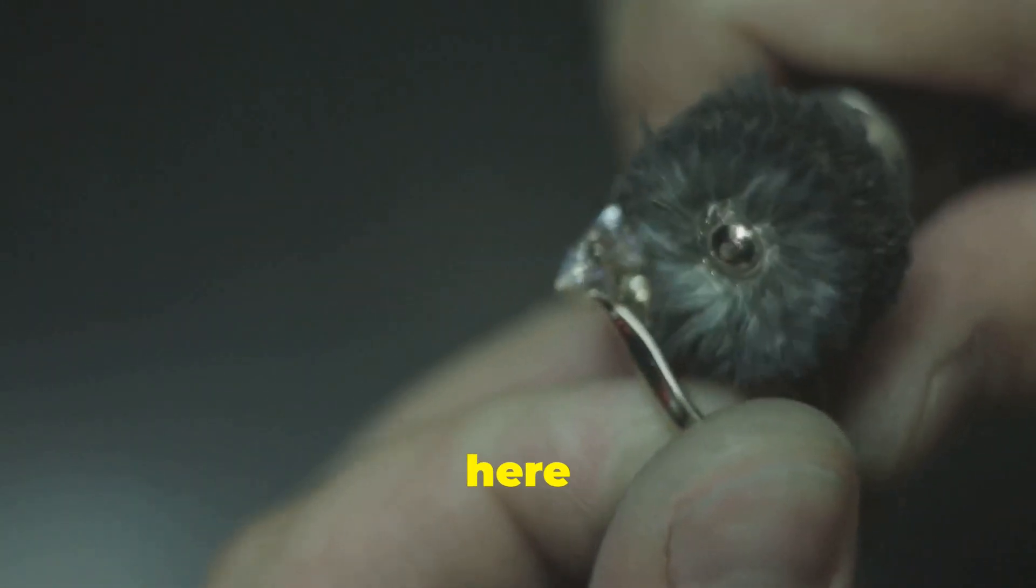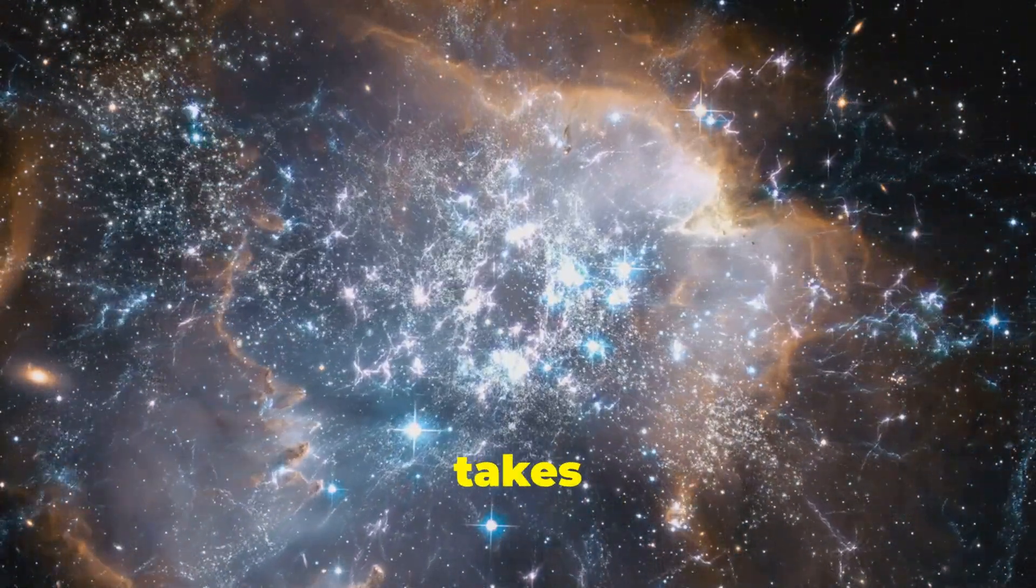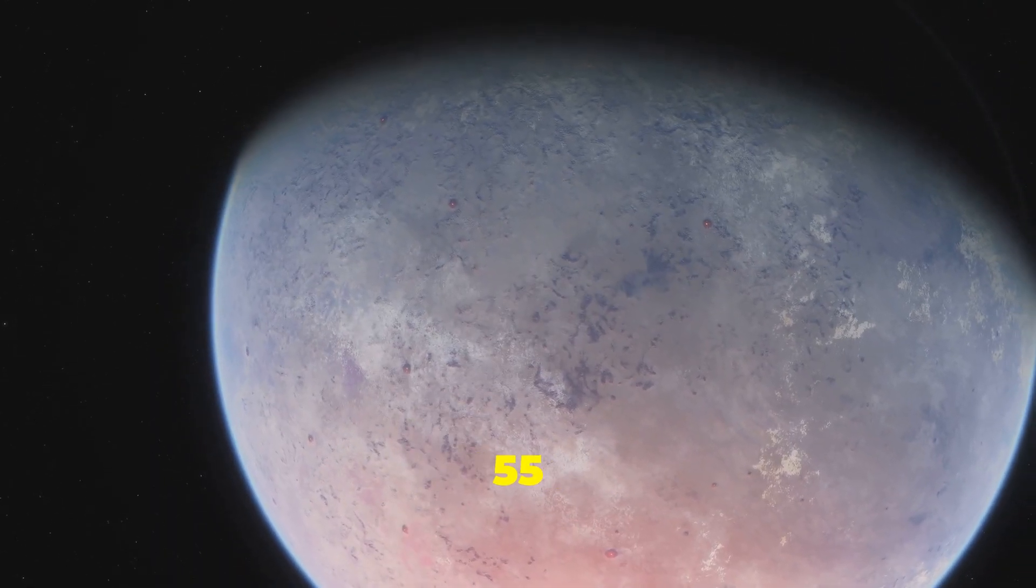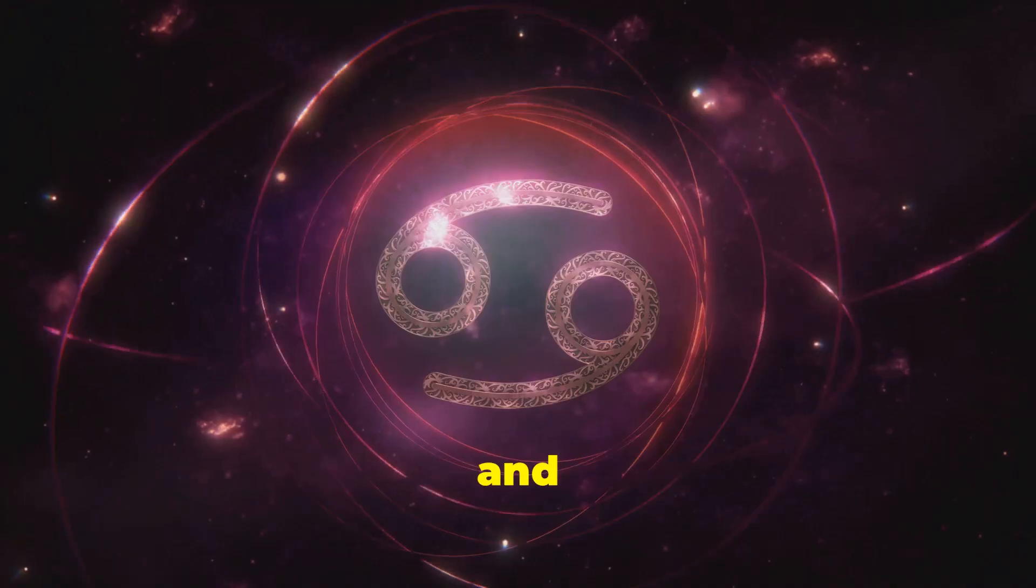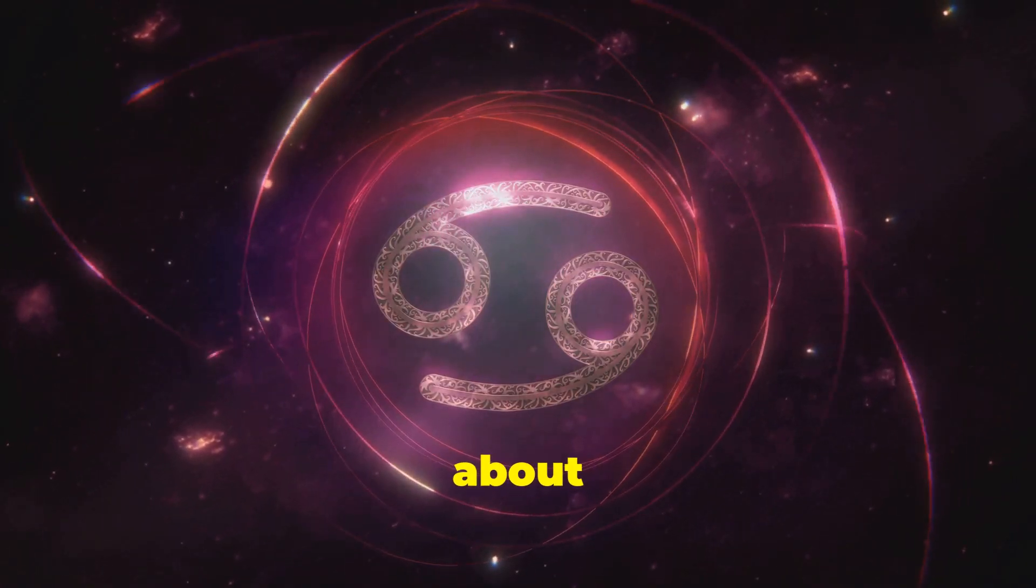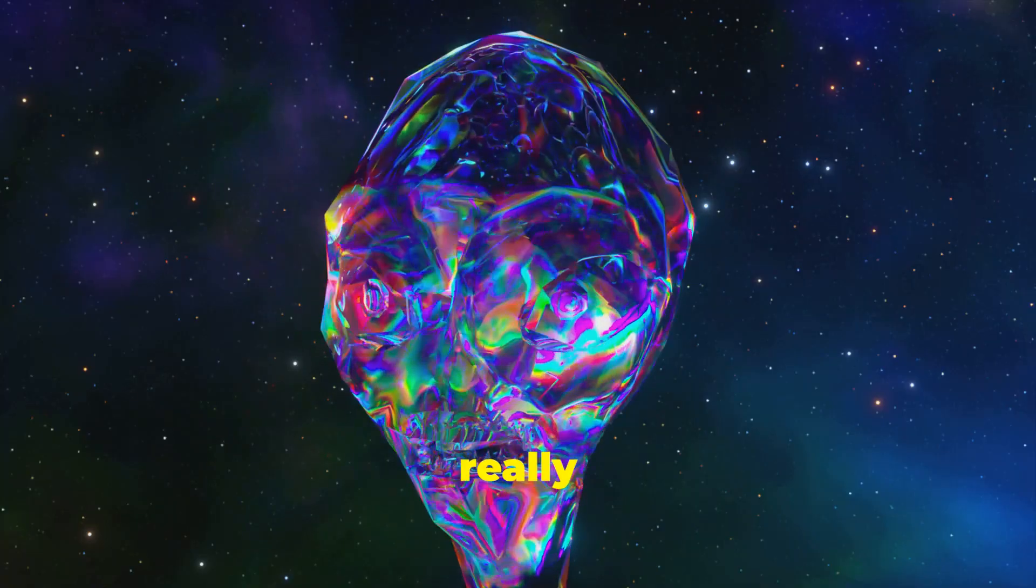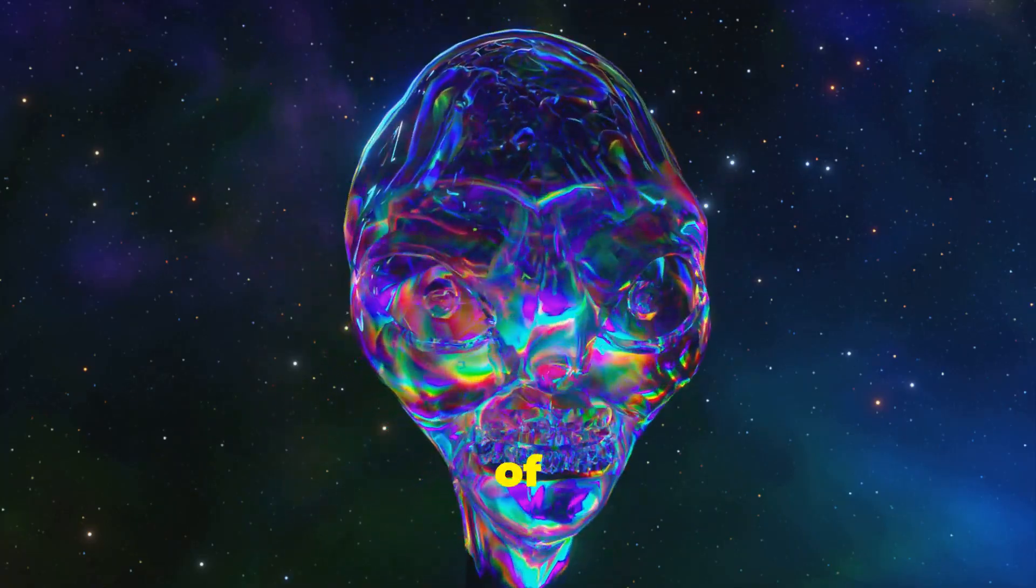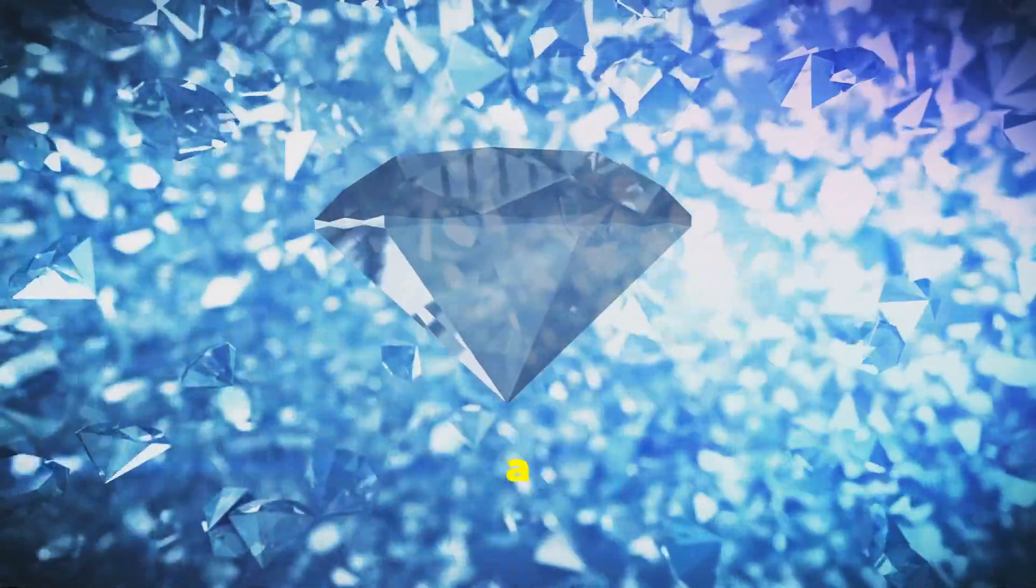Diamonds might be a girl's best friend here on Earth, but out in the vast expanse of space, there's a planet that takes bling to a whole new level. Discovered in 2004, 55 Cancri E is a super-Earth exoplanet that's twice the size of our planet and orbits a sun-like star located about 40 light-years away from us in the constellation of Cancer. But here's the really dazzling part. 55 Cancri E is made largely of pure crystallized carbon. That's right, this planet is essentially a giant diamond.